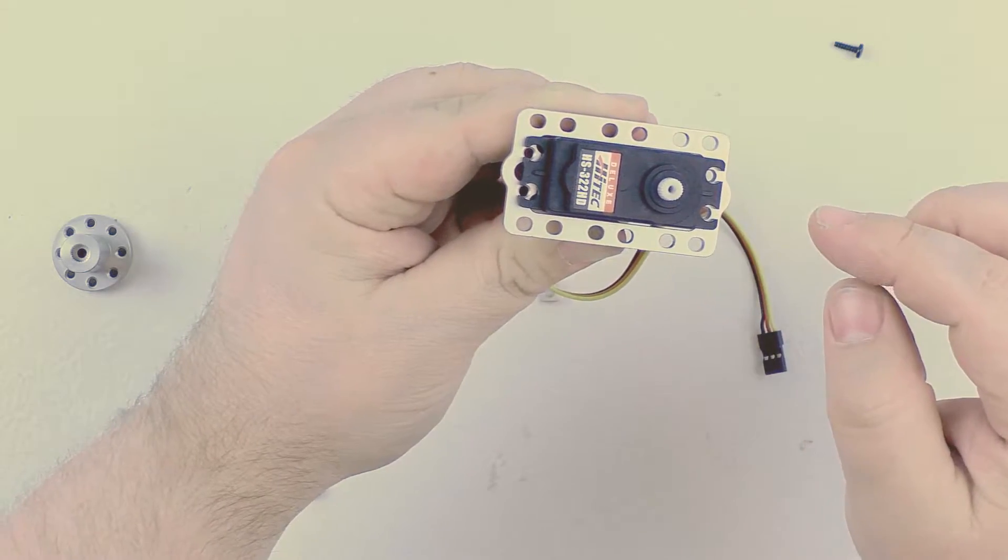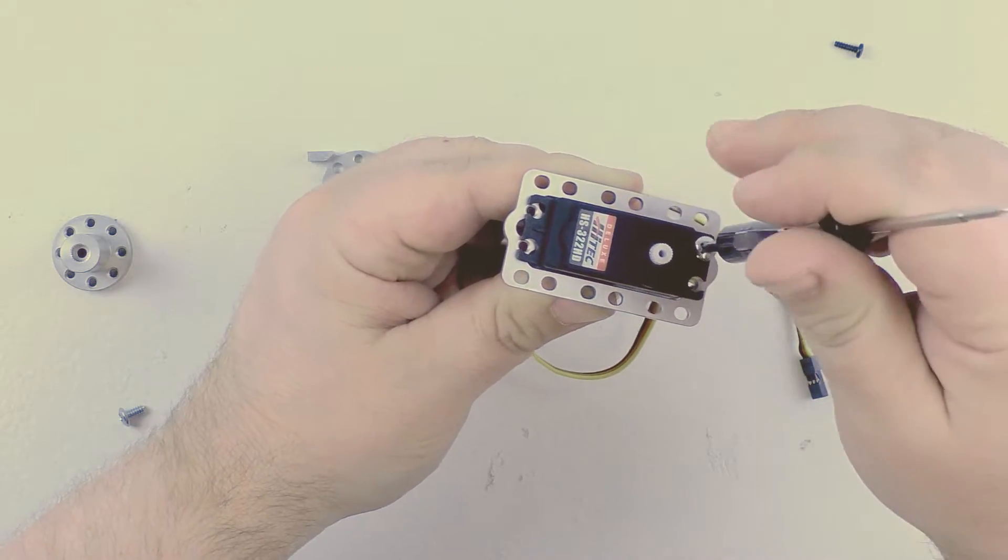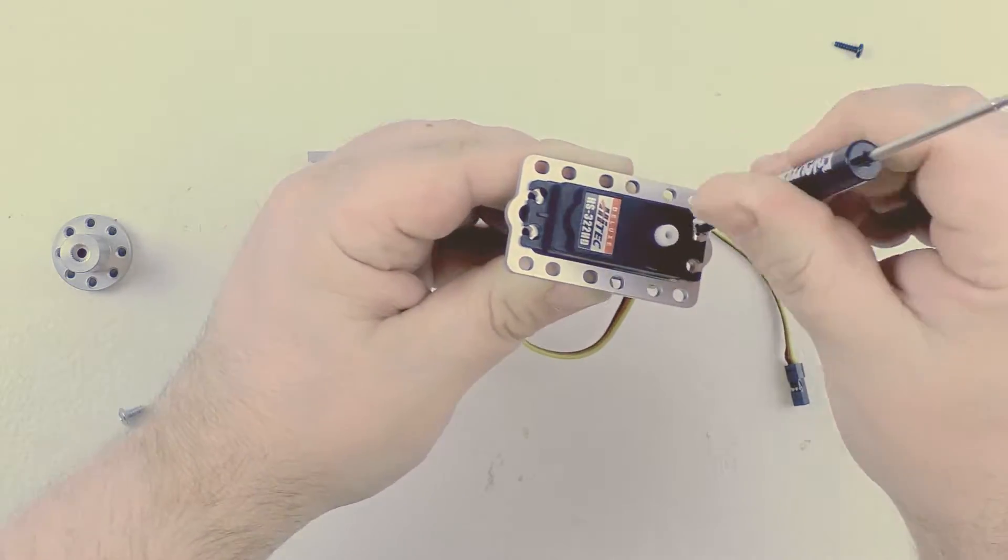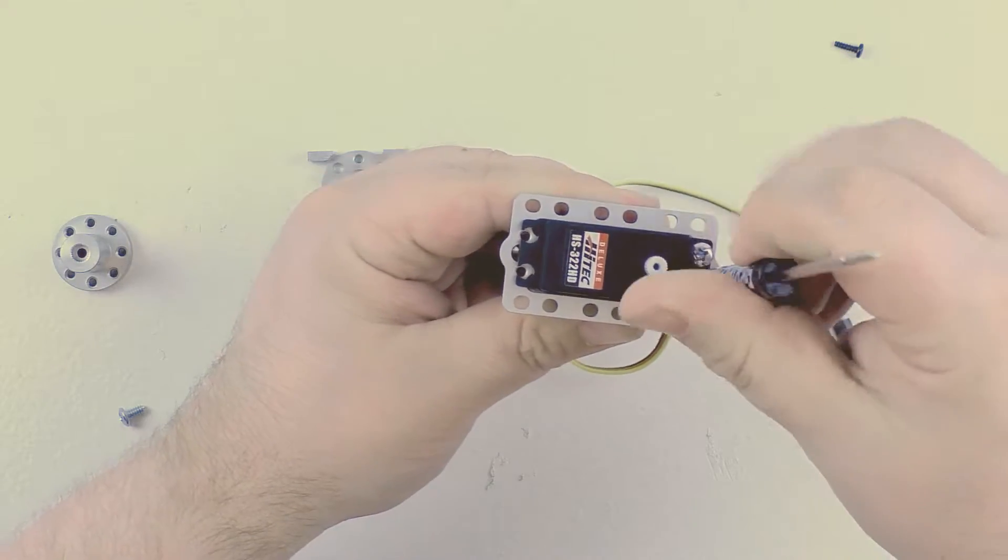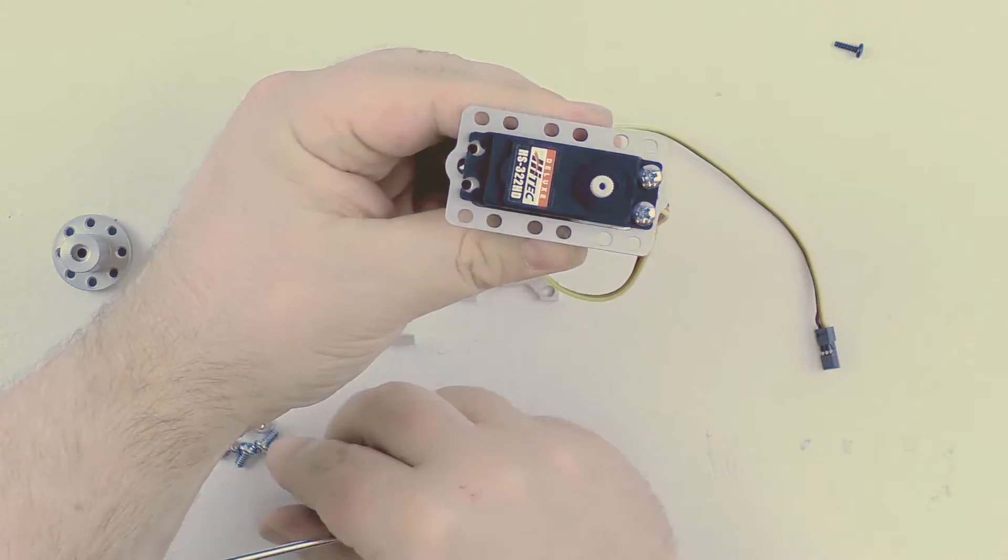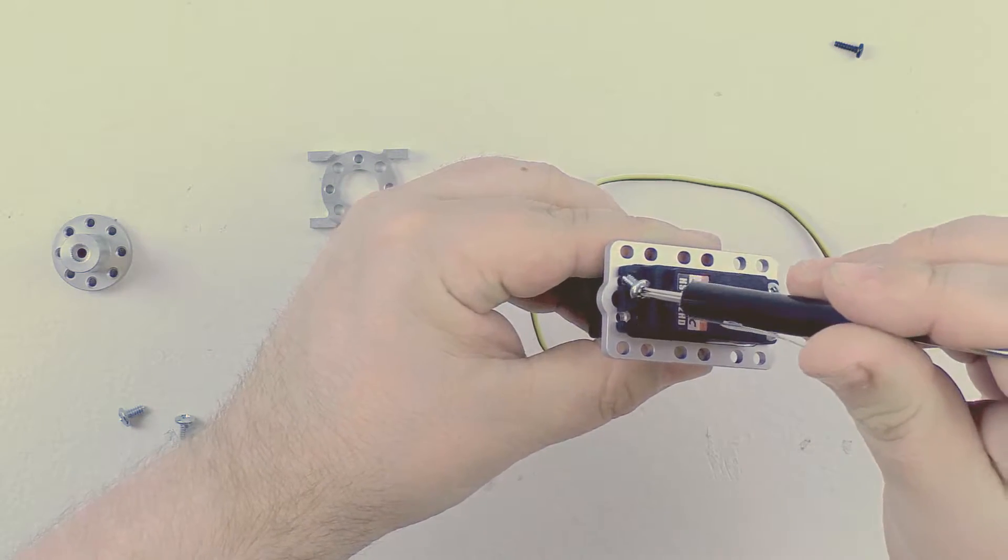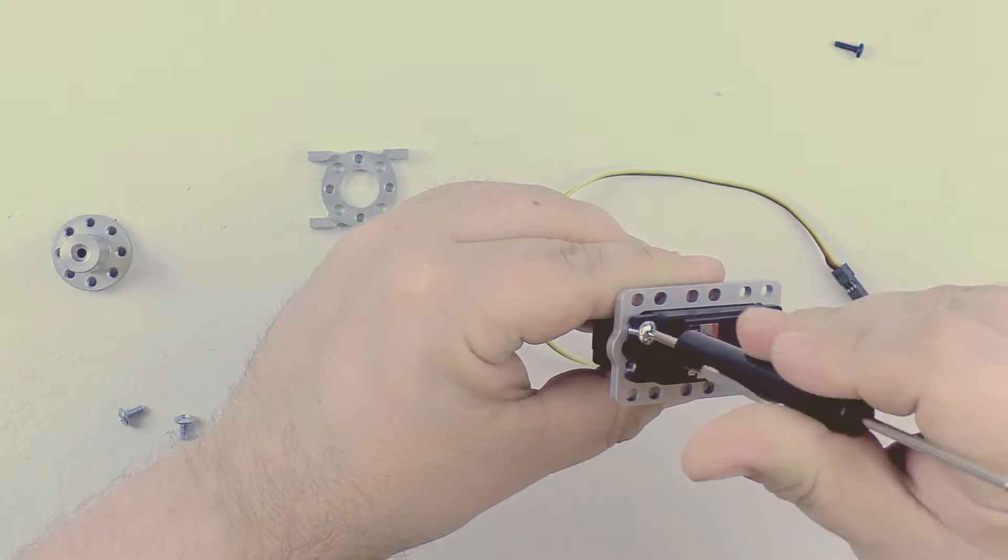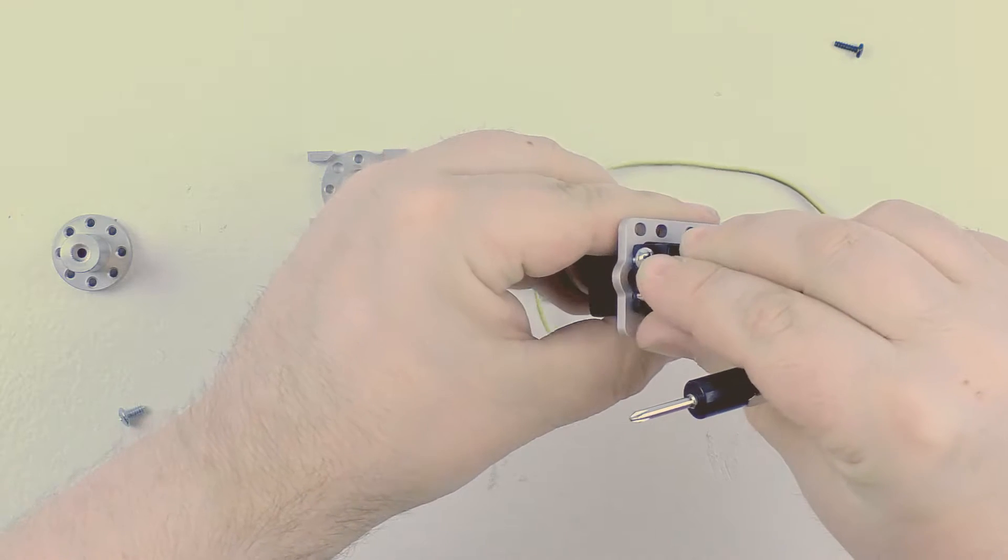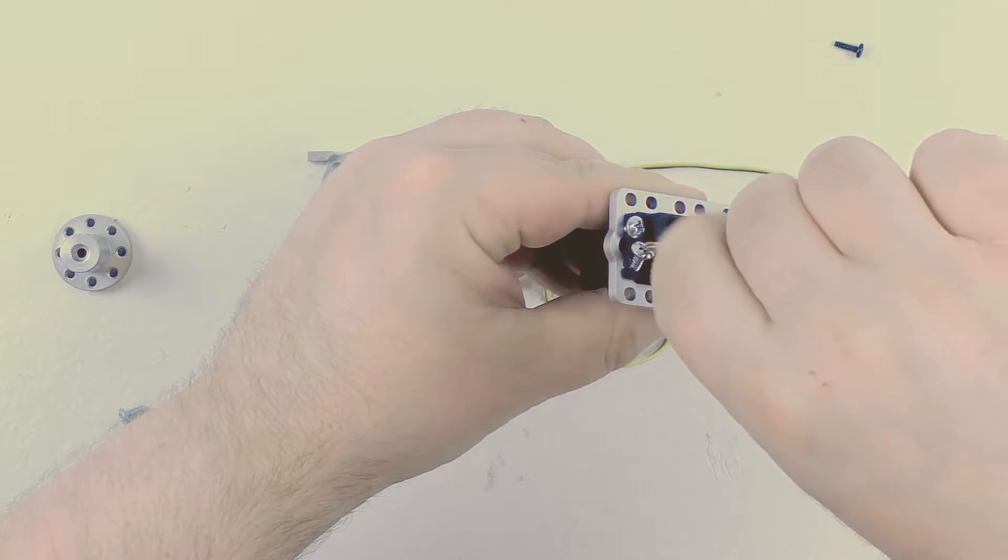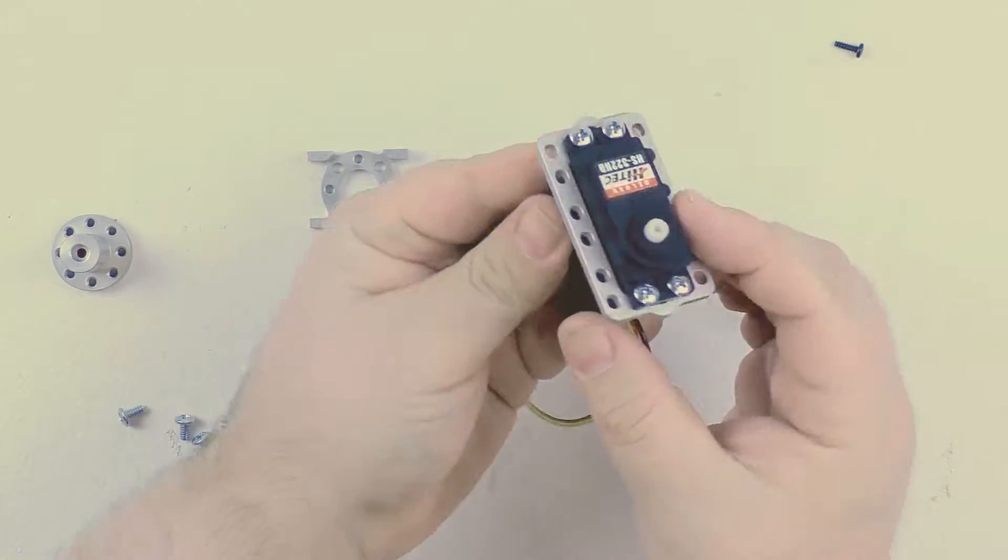And then we are going to go ahead and install four bolts in the four sections here. The holes here are threaded so the bolts just screw right in. So that is the main part of the servo block installation.